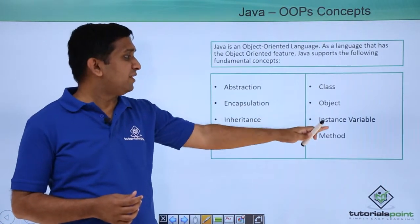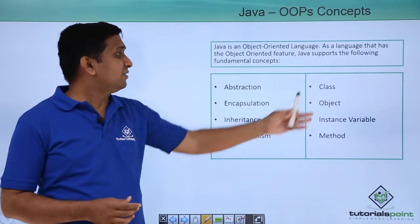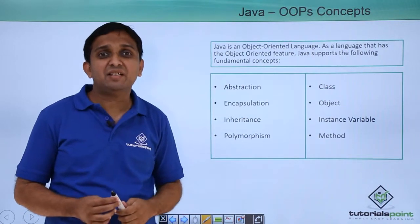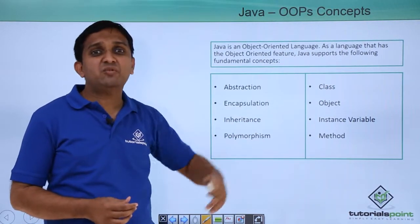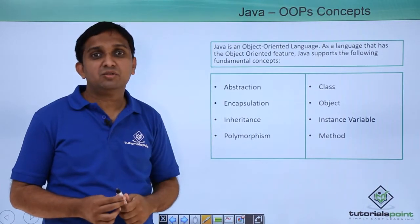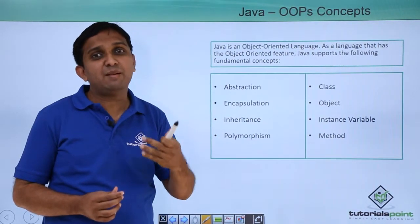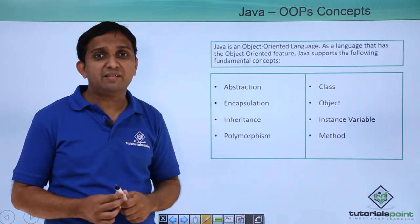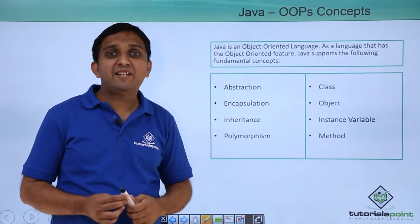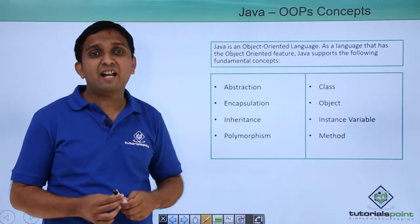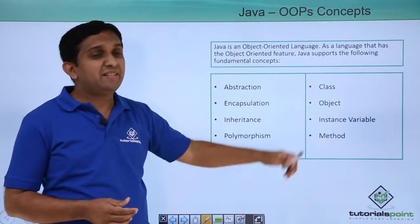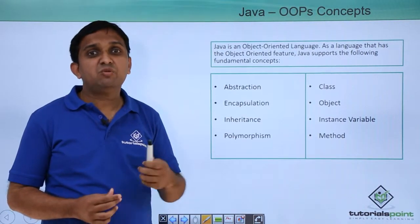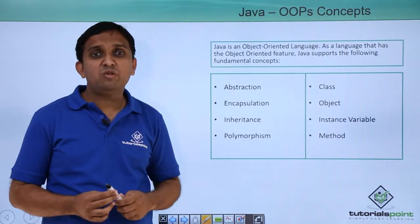There are a few more terms: Class, Object, Instance, Variable, and Method. A Class is a way to implement abstraction in a program. An Object is an instance of a class — it is like a variable. Just as you have primitive variables like int, char, float, and double, for a class you have a variable called an object. Instance variables are the attributes of an object written inside the class, and methods are also written inside a class. A method is analogous to a function in C. This was something regarding Object Oriented Programming Structure. Thank you.